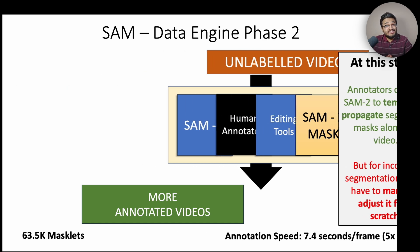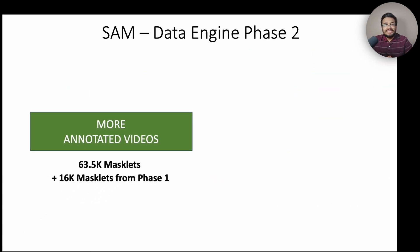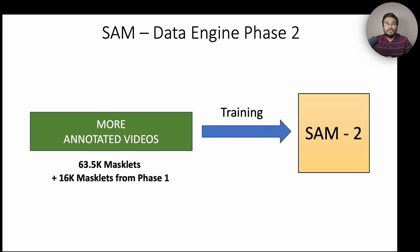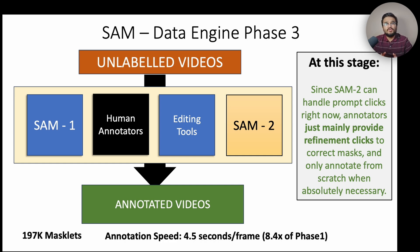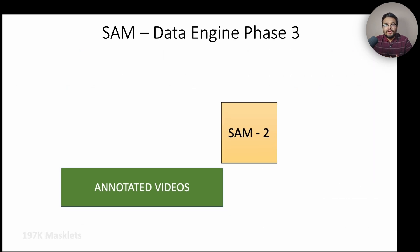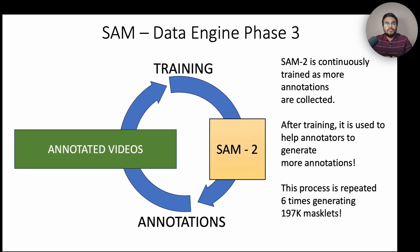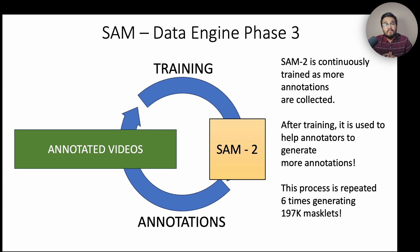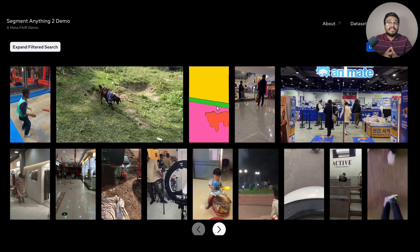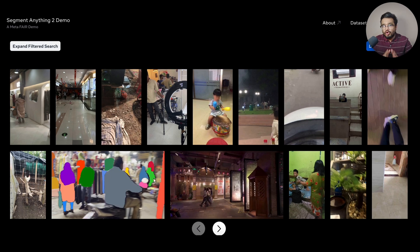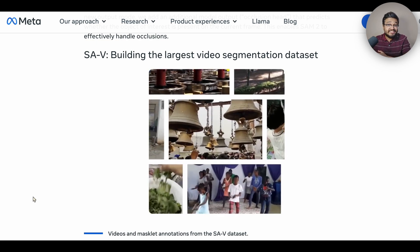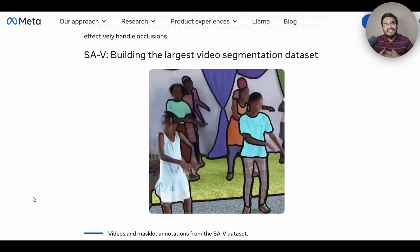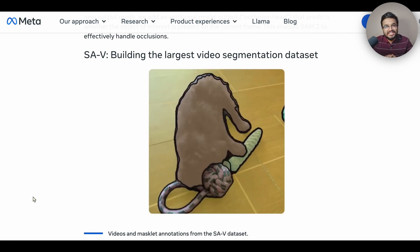The phase 2 data trains a new SAM2 model that now accepts various prompt types including masks and point clicks. In phase 3, SAM2 already generates decent masks, and annotators only provide refinement clicks. They continually train SAM2 on newly annotated data and use the trained model to annotate even more data, eventually collecting 197,000 masklets. The final SAM2 model also automatically segmented 451,700 new masklets from unlabeled videos without any human supervision. These automatic masklets plus the 197,000 manually annotated ones form the massive SAV dataset.